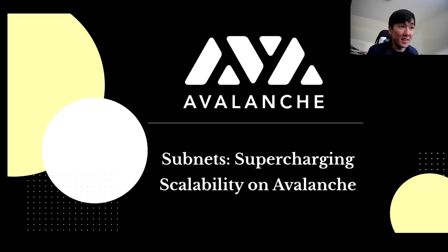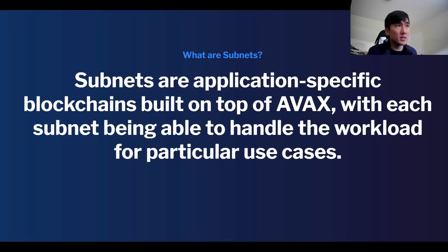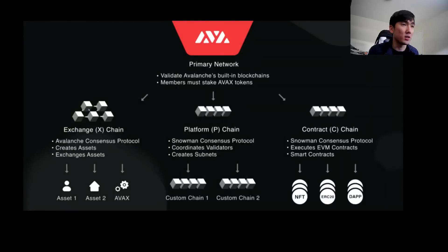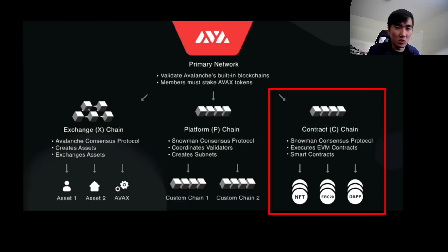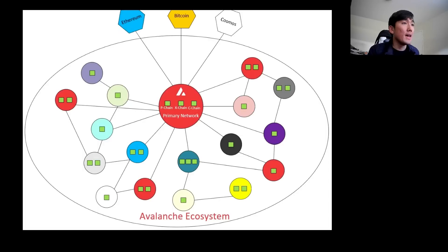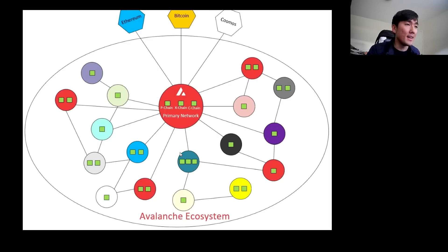Now I'd like to go over a few examples of application-specific blockchains, starting with Avalanche subnets — I think this is one of the things that's going to get a lot of hype in the next month or two because it's coming out soon. Subnets are application-specific blockchains built on top of Avalanche, with each subnet able to handle the workload for particular use cases. Avalanche has three chains: the X chain, the C chain, and the P chain. The C chain is what we use for DeFi on Trader Joe, etc., but subnets live on the P chain. These application-specific blockchains connect on top of the P chain and are interoperable with one another. If a subnet is specific to social tokens or NFTs, it doesn't matter if dgens are being liquidated on the C chain — that negative externality is not passed on to that subnet.